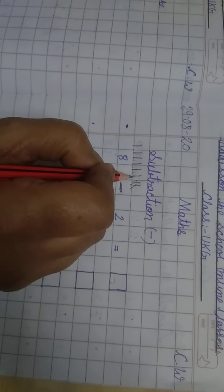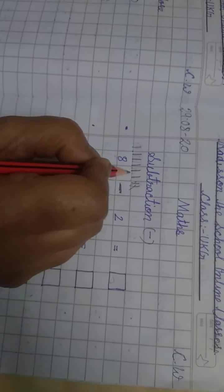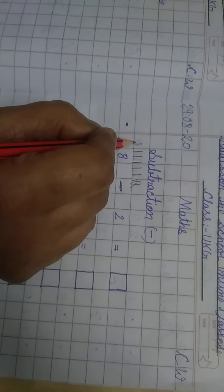How many lines are left? 1, 2, 3, 4, 5, 6. So, this is 6, count and write.